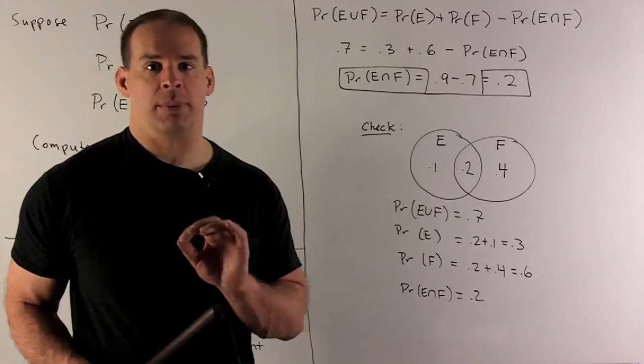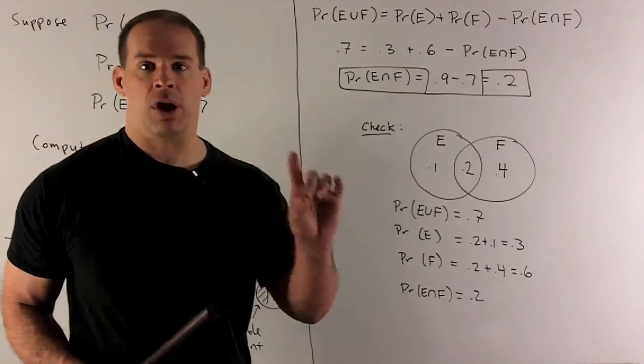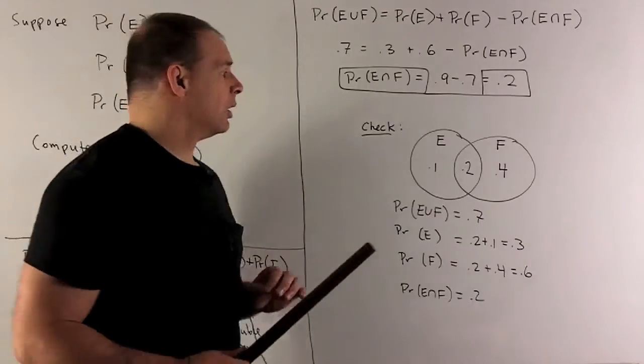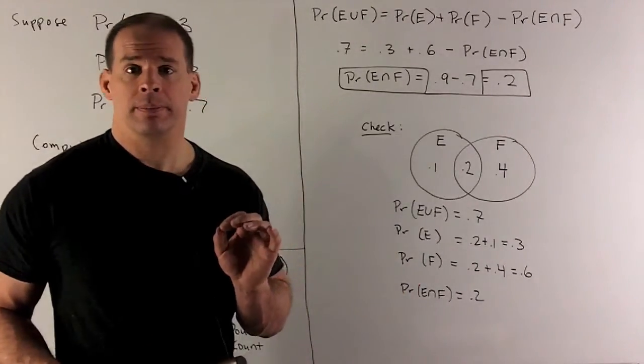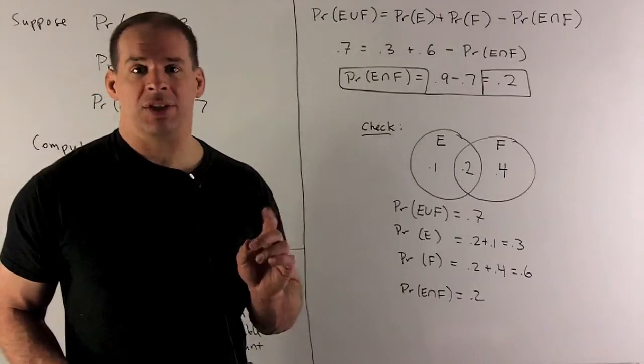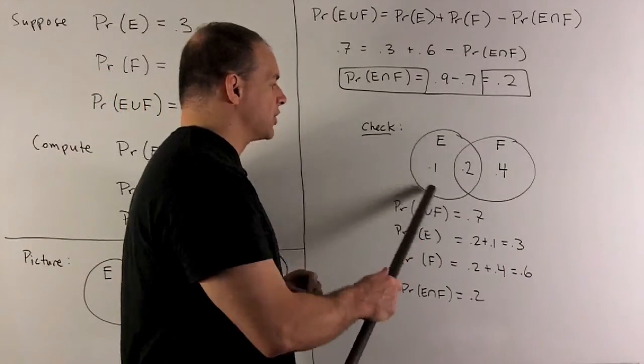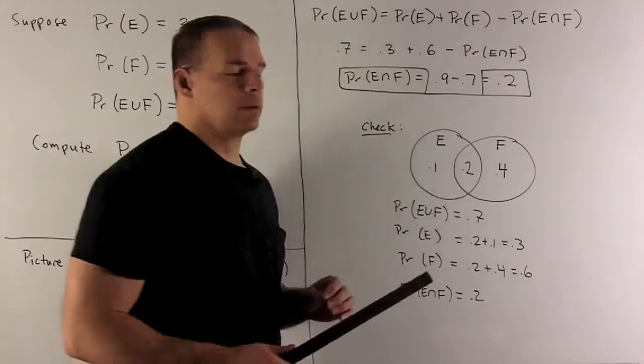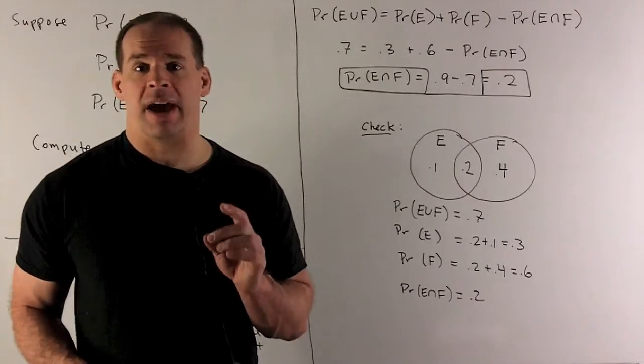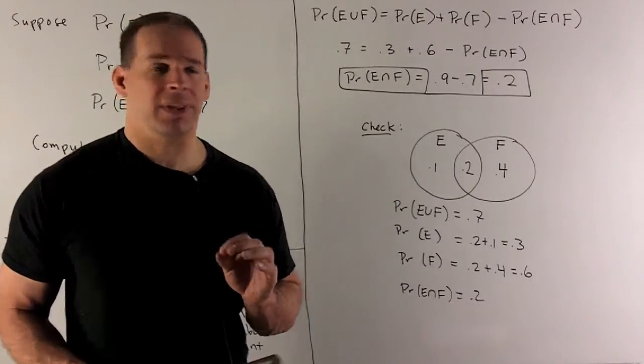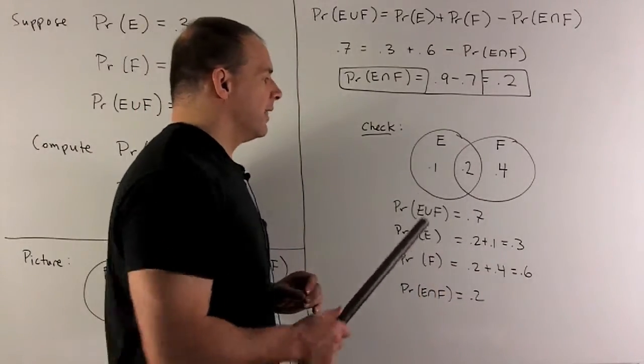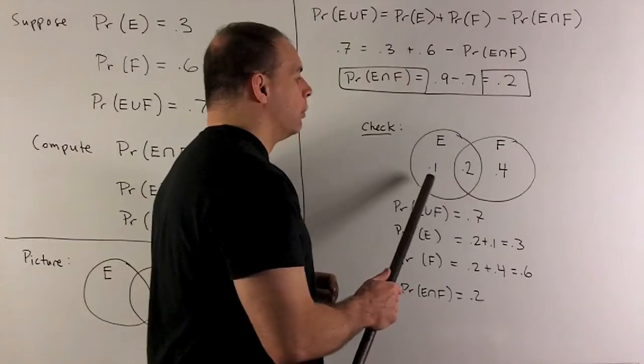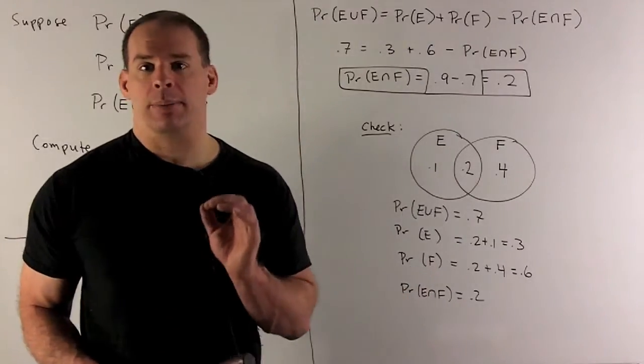Now we should draw the picture just so we make sure we know how everything falls into place. We'll have intersection has probability 0.2. Since probability of E is 0.3, that means we'll have a 0.1 on the outside piece. Then probability of F is 0.6, so the non-intersection piece is going to have probability 0.4, and then if I add these up, we note we get 0.7, and that's going to be the probability of the union.